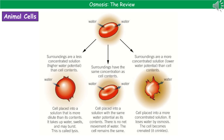Now consider the exact same situations but with animal cells instead of plant cells — the results are very different. Starting with the middle scenario: placing red blood cells in a solution with the same concentration as inside the cell means water enters at the same rate it leaves, so there is no net movement of water and everything remains the same. If we place red blood cells in a higher water potential solution such as distilled water, water moves from the higher water potential solution into the red blood cells. Because there is no cell wall, the cells keep swelling until they burst — a process called lysis.